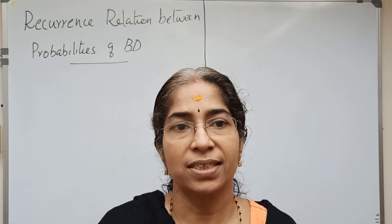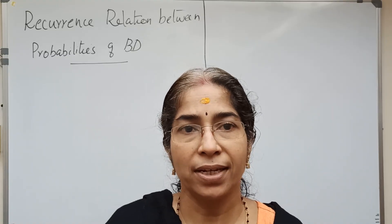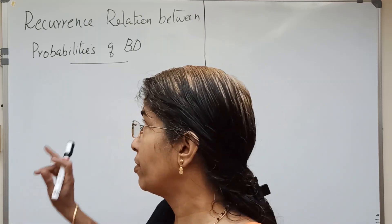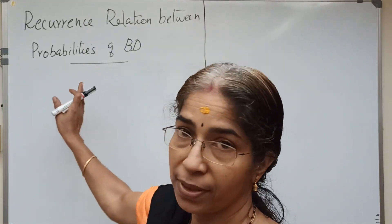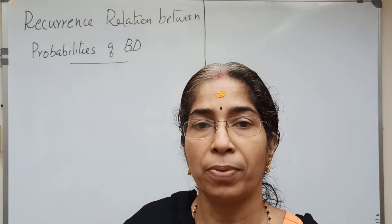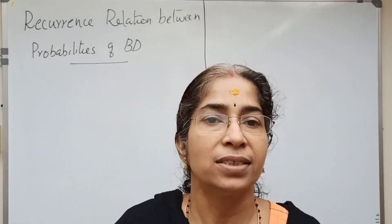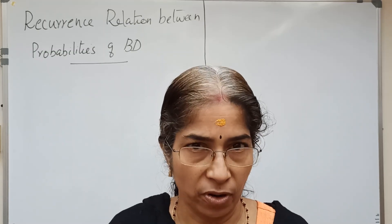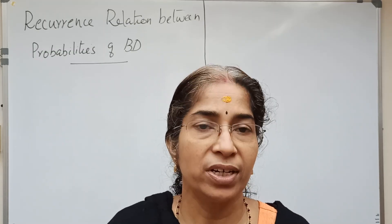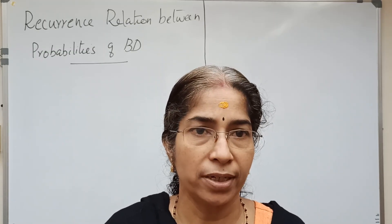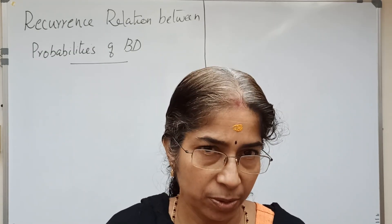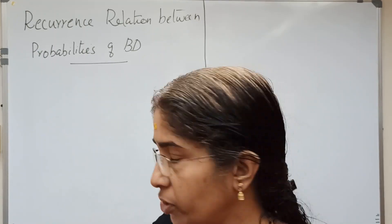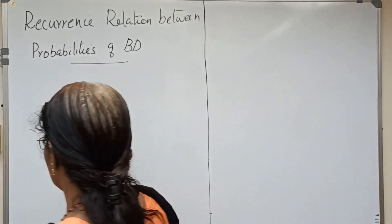Now, we discuss the recurrence relation between probabilities of binomial distribution. That is, if we have f of x, we can obtain f of x plus 1. We can derive a relation.